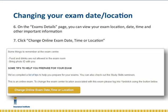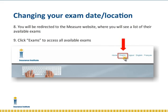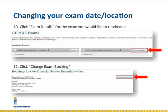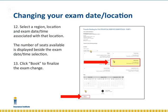By clicking there, you will be redirected to the site where you can transfer your exam booking. Click Exams at the top of the page. You will now see the exams for which you are currently registered. Click on Exam Details beside the exam you would like to transfer, then select Change Exam Booking. You can now choose the location where you would like to write your exam. Once you've chosen a region and location, you'll see all available dates and times, as well as the number of seats left. The final step will be to click Book — this will finalize your transfer.